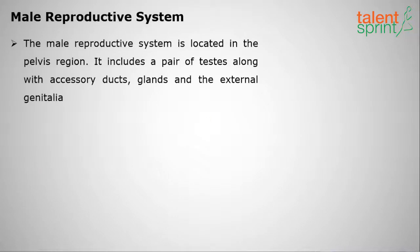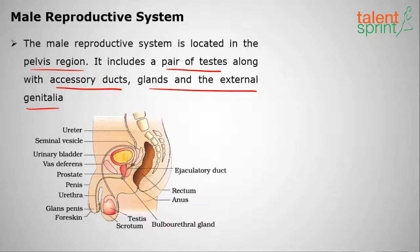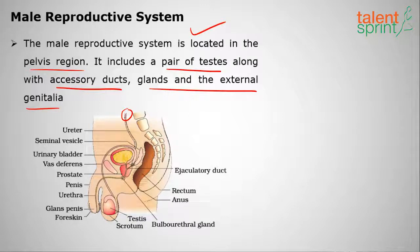The male reproductive system is located in the pelvis region of the human body. It includes a pair of testes, along with accessory ducts, glands, and external genitalia. Key structures include the urinary bladder, urethra, a pair of testes within a single scrotum, and the penis.